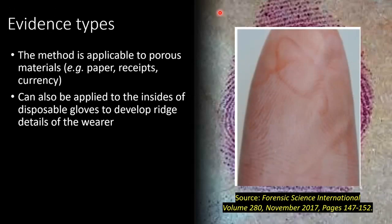In terms of the types of evidence that ninhydrin is typically applied to, it's generally applied to porous materials — so paper, receipts, paper currency. It can also be applied to the insides of disposable gloves. If they are left at a crime scene, ninhydrin can actually develop the ridge details on the inside of the gloves where the hand was in contact with the glove material.